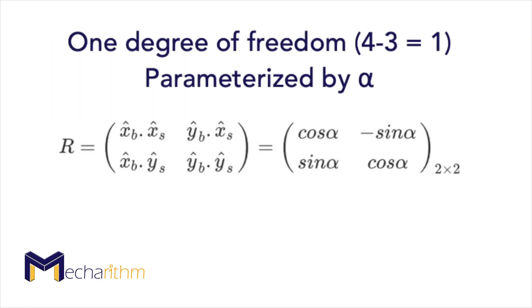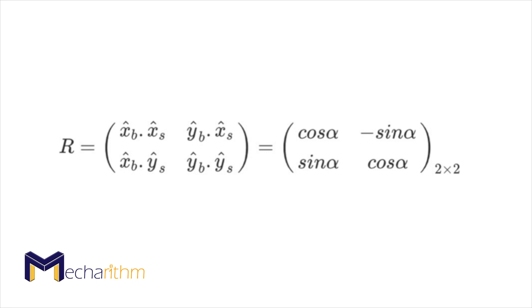Thus, we have one degree of freedom, which is parameterized by the angle alpha to represent the orientation. So, recall that for this space, minus three constraints, we would have only one degree of freedom, which is alpha. And this alpha can represent the orientation. The rotation matrix is an implicit way to represent the orientation. Since we used four parameters, subject to three constraints, to parameterize alpha.